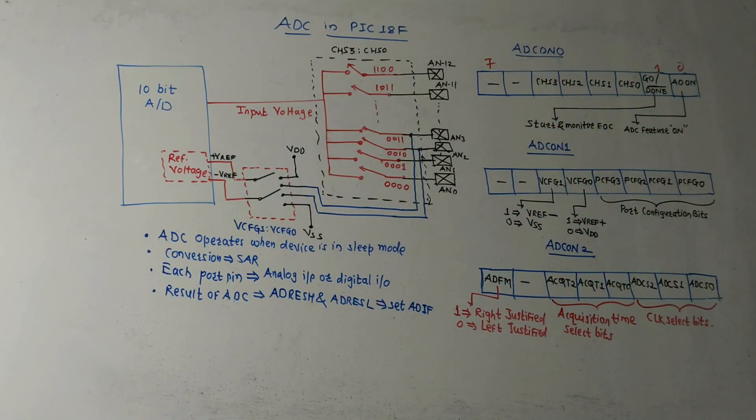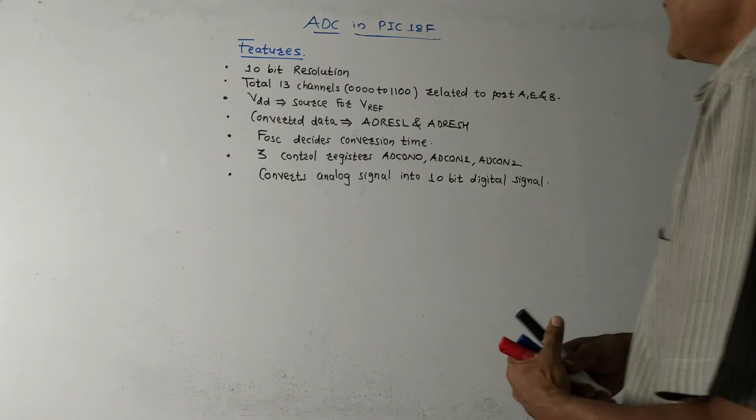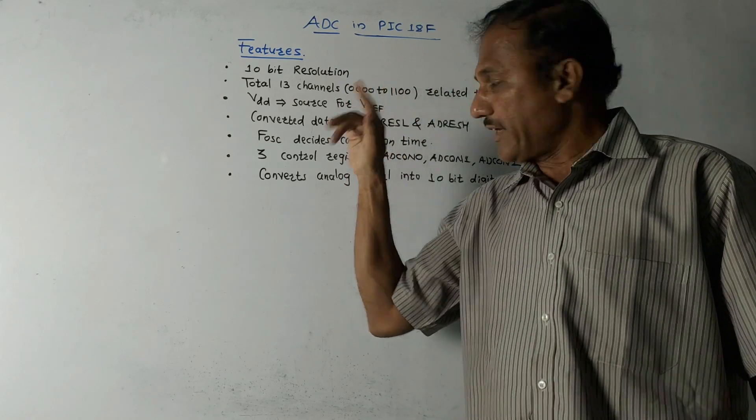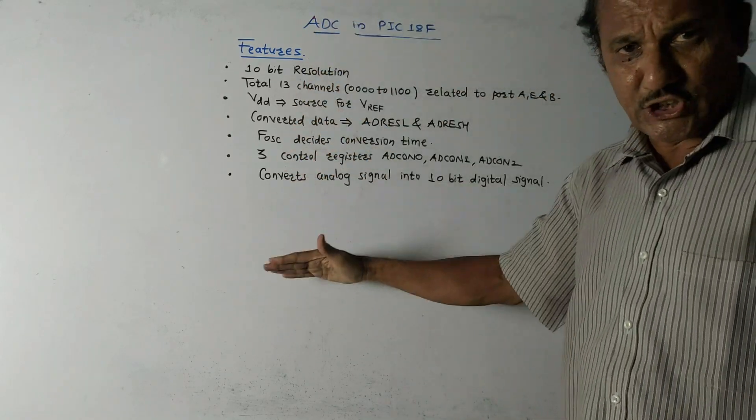So this is about the block diagram of ADC in PIC microcontroller. Next part is features of ADC in PIC microcontroller. So this is the list of features.